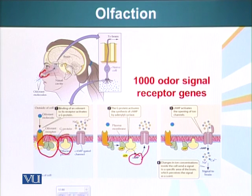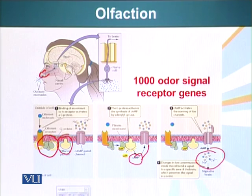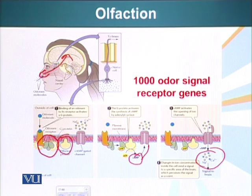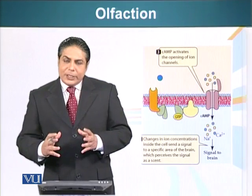In olfactory cells, cyclic AMP rather than activating protein kinase A binds an ion channel receptor directly. The ion channel opens, and there is an influx of positively charged ions — sodium and calcium. This results in a change in the charge differential across the membrane; the neuron becomes depolarized and sends an electric impulse to the brain, which detects the particular odor molecule.